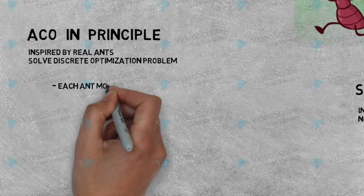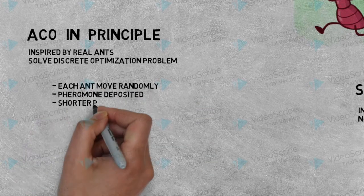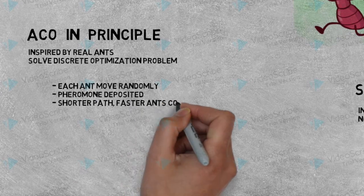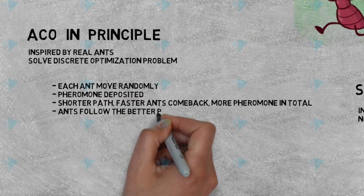Each ant moves randomly at first, then each ant deposits pheromone onto the path. The shorter the path is, the pheromone signal gets stronger, as it is a positive feedback system. Then ants follow the path with the intense pheromone.